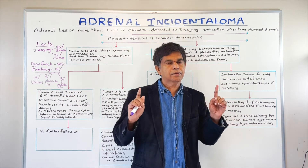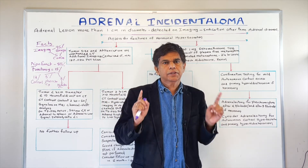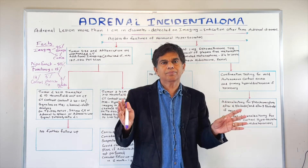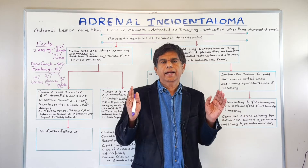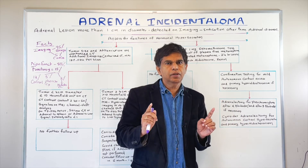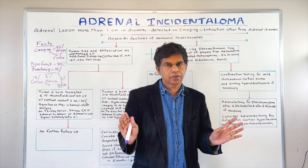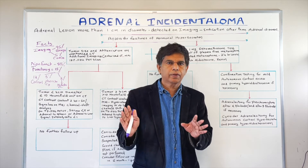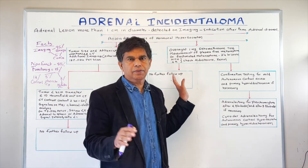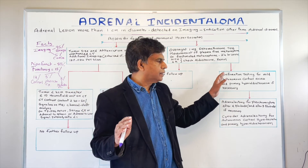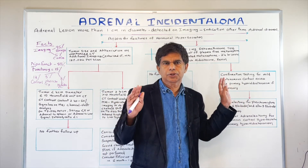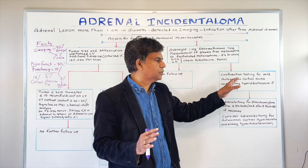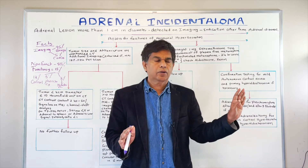The other thing to look at is: is it functional or non-functional? If functional, the first thing to consider is that 12% will be cortisol-producing — do the 1 milligram dexamethasone suppression test. For pheochromocytoma at 8%, do plasma-free metanephrines or 24-hour urine-free metanephrines. If there's hypertension and hypokalemia, check plasma aldosterone-renin ratio — usually greater than 20. If all come back negative, you don't need to worry. If positive, do confirmatory testing — cortisol will be increased, ACTH will be decreased.